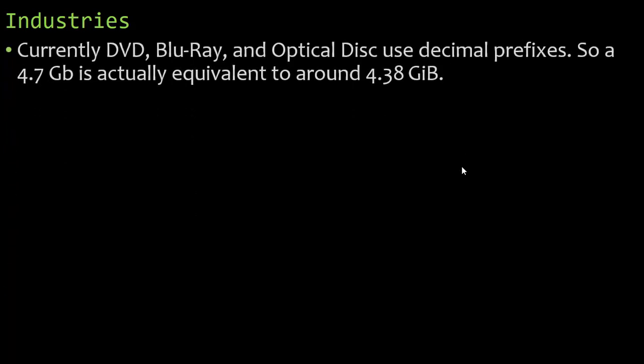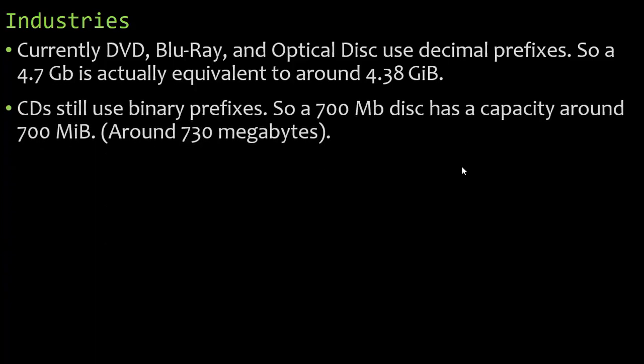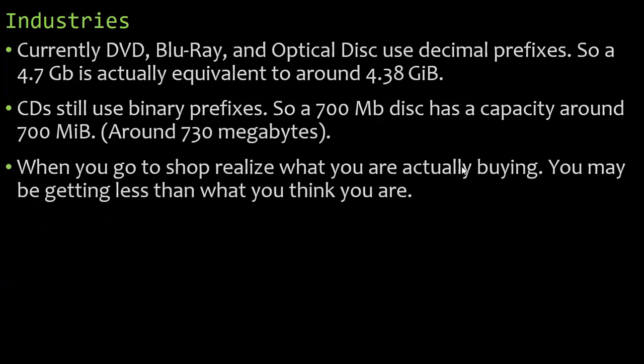Currently, DVD, Blu-ray, and optical disc use decimal prefixes. So when you look at a 4.7 gig disc, it's actually equivalent to about 4.38 gibibytes, not 4.7 gigs like you think it is. CDs, they're on binary prefixes. So a 700 megabyte disc that you see actually has a capacity around 700 mebibytes, which is about 730 megabytes. You're actually getting more megabytes than you think you were because they're on the binary prefix, not the decimal prefix.